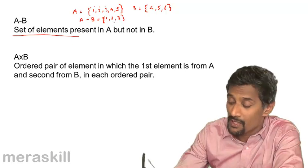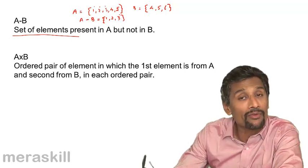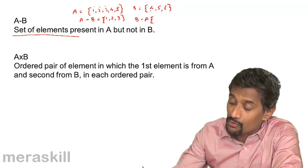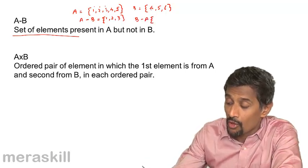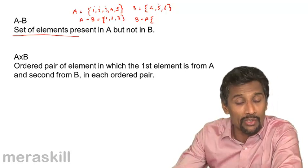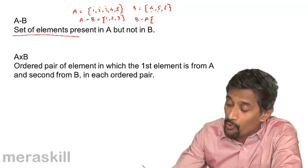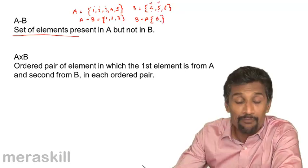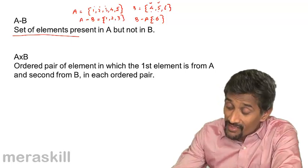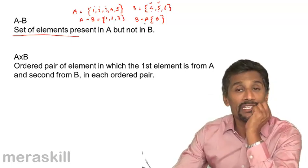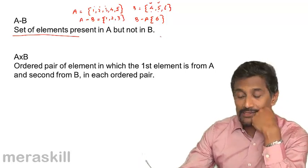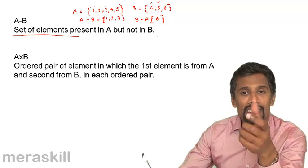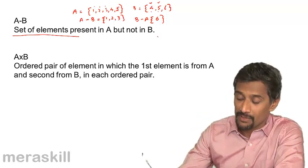A minus B gives elements belonging to A but not to B. For B minus A, we take elements in B that are not in A. Since 4 and 5 are in both sets, they're ruled out, so B minus A contains only {6}. These operations are always between two sets: A minus B contains all elements in A not present in B, and similarly for B minus A.